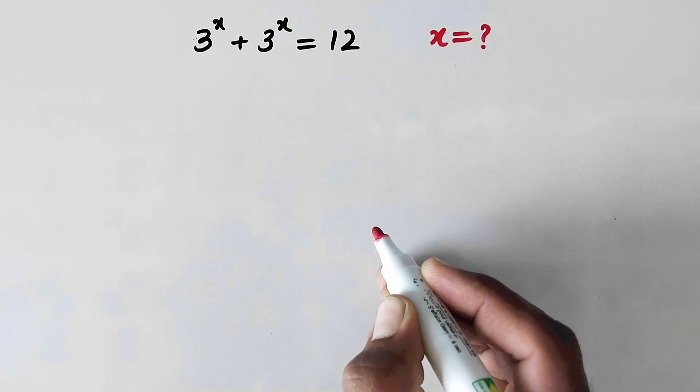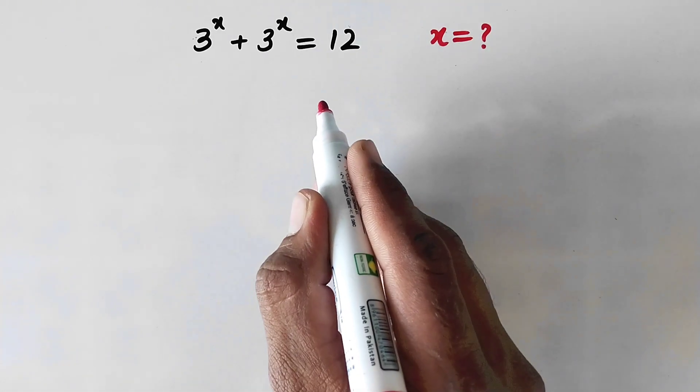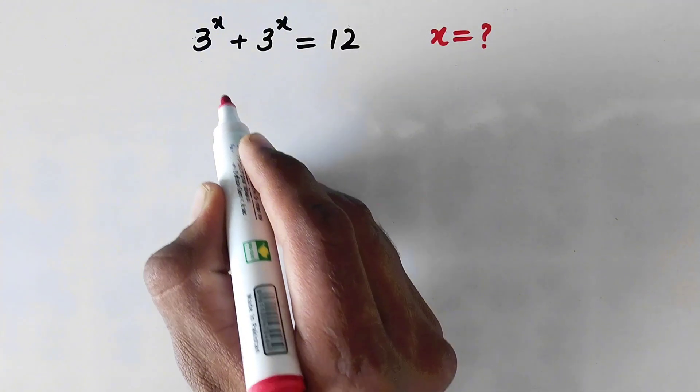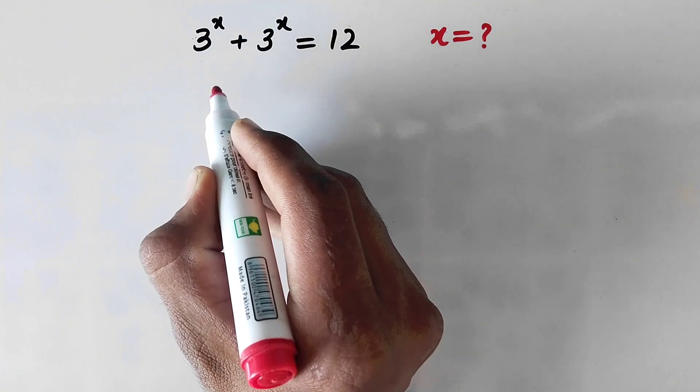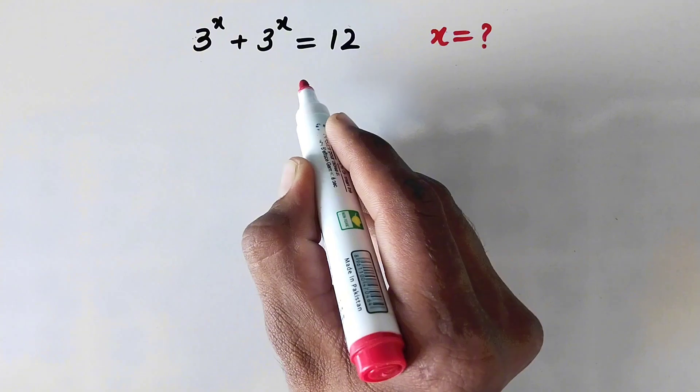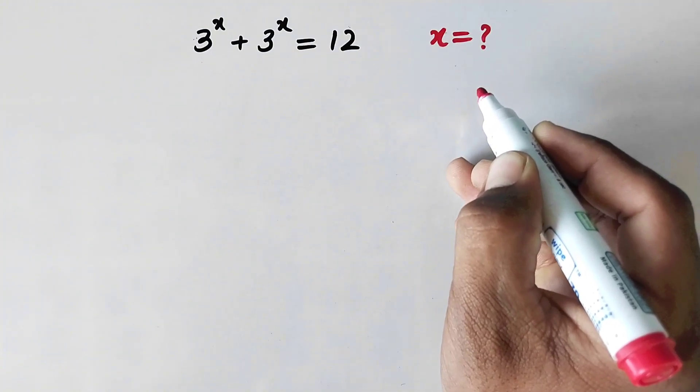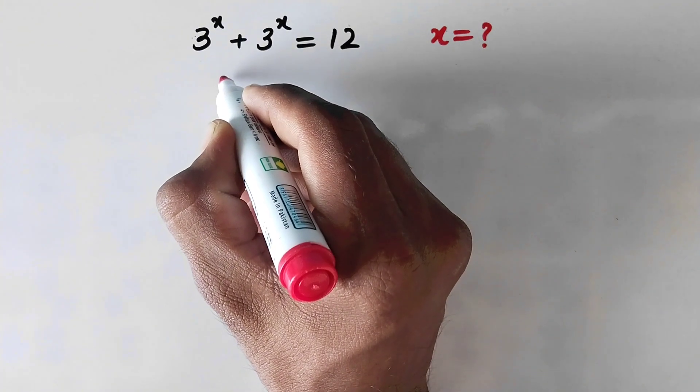Hello everyone and welcome to explore maths. In this video we are going to solve an olympiad math problem: 3 to power x plus 3 to power x equals 12, then what is the value of x? So let us see its solution.